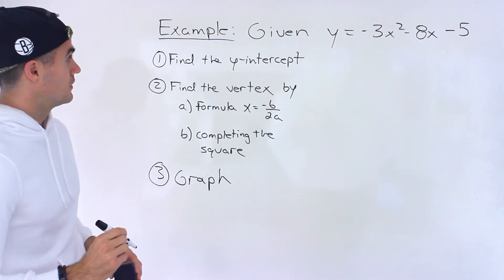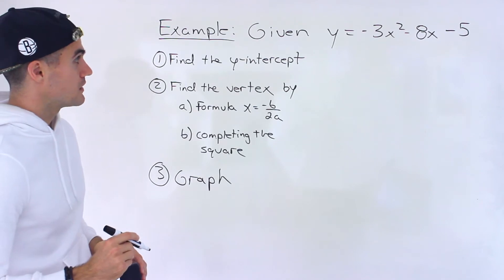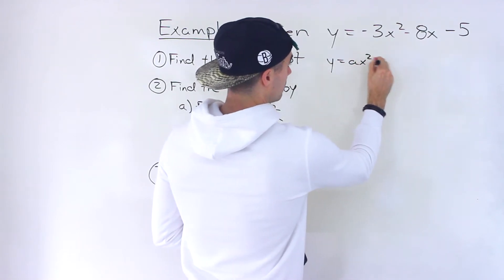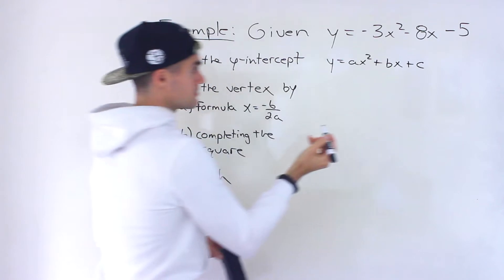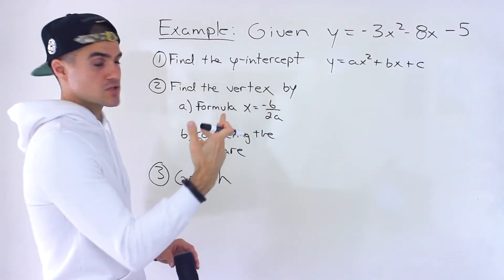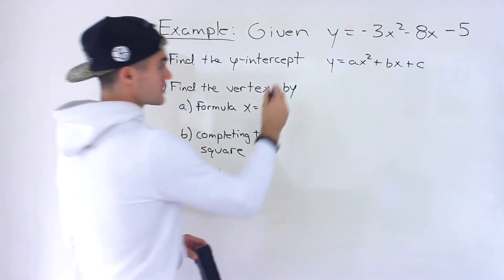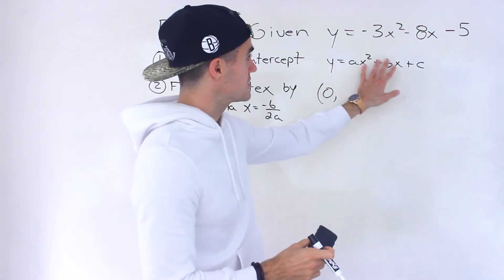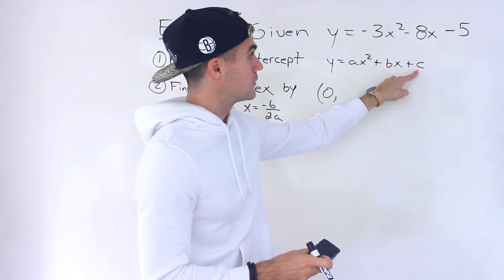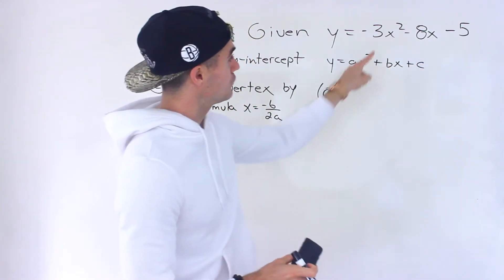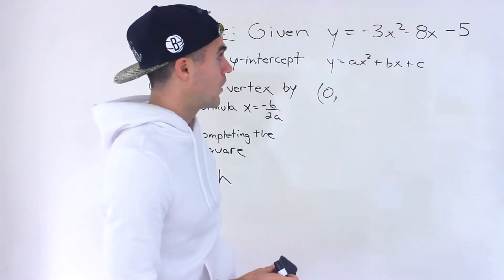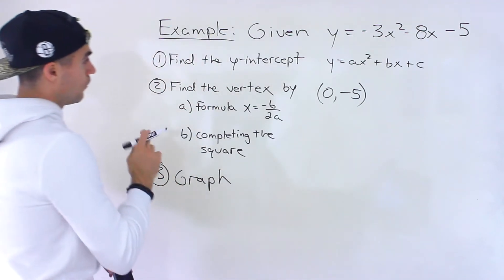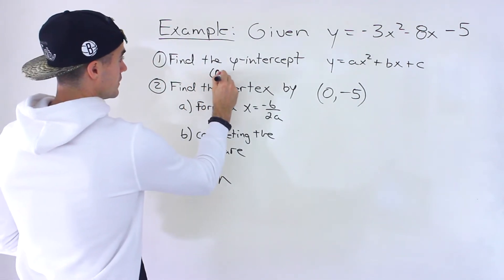Starting with number one, finding the y-intercept. If you have a quadratic in standard form — ax squared plus bx plus c — the y-intercept is always just the c-value, because for the y-intercept the x-value has to be 0. If we plug in 0 for x, those terms go away and we're left with the c-value, which is negative 5. So 0, negative 5 is the y-intercept.